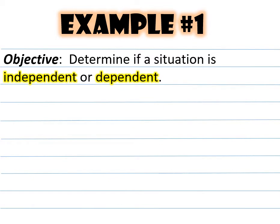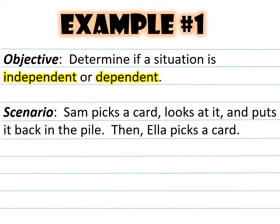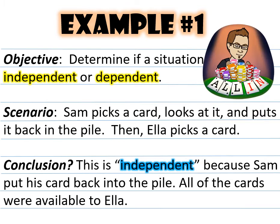Example number one: determine if a situation is independent or dependent. Sam picks a card, looks at it, and puts it back in the pile, then Ella picks a card. The conclusion is that this is an independent event because Sam puts his card back into the pile — all of the cards were still available to Ella.